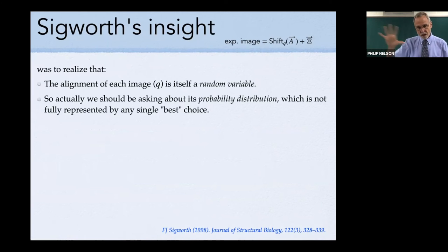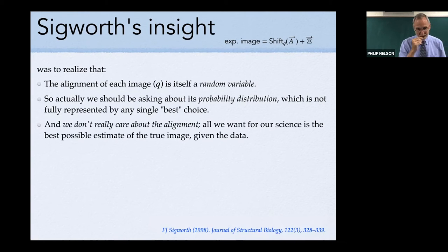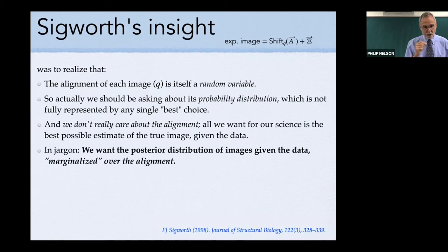Fred Sigworth's insight was to realize that the alignment of each image is of course itself a random variable. The Poisson noise is a random variable, but the alignment is also a random variable. It's unknown. We should really be talking about the probability distribution of that shift instead of trying to select the best winner and throwing away all other possible shifts. There's a probability distribution. There's one most probable shift and then there's some other shifts that are somewhat probable. Keep them all. Just make a weighted average of them. We don't actually care about the alignment. It's an unknown variable. It's called a nuisance variable. We'll find the probability distribution of the image and its shifts, and then we'll integrate out all the shifts. That's called marginalizing them, leaving what we want, which is a probability distribution for the image itself.